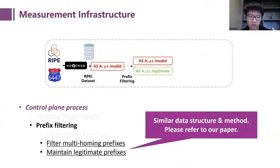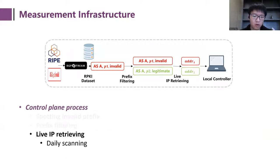And then we use similar data structure and method to filter multi-homing prefixes and maintain legitimate prefixes. Please refer to our paper for more information if you are interested. Finally, we retrieve live IP addresses from the prefix pair. In order to increase runtime performance, we do the scanning every day and record all the live IP addresses. And then in the retrieving process, we directly refer to the record.